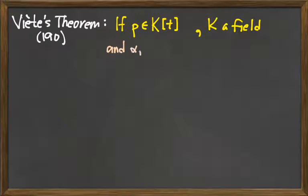Let's call them alpha 1, alpha 2, alpha 3, and so on, up to alpha n. So we'll assume here that P is a polynomial of degree n.